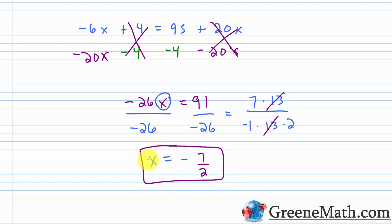I'm not going to check this one in the interest of time, but if you want to, pause the video, go back to the original equation, plug in negative seven-halves for each occurrence of x, and verify that the left and right sides are equal.